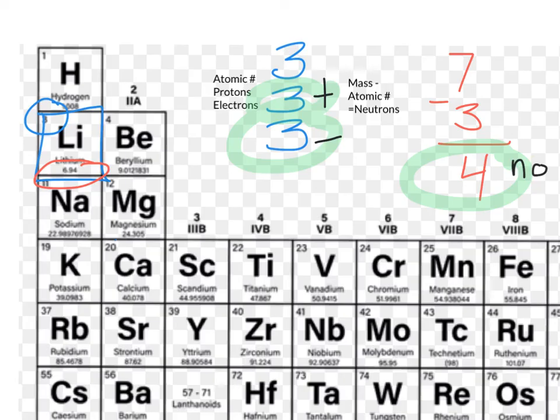Your number of protons and electrons should always be equal to one another. The number of neutrons can be different. In an electrically neutral atom, your protons and electrons are equal, and your neutrons can have a different number because they have no charge.